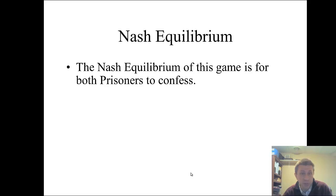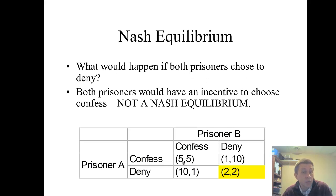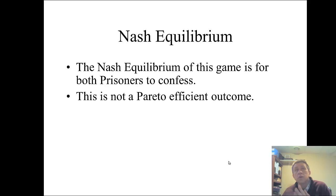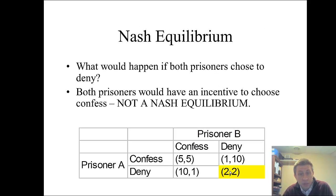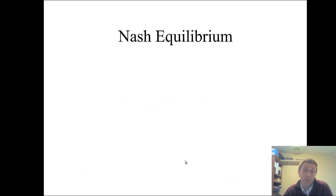So what is the Nash equilibrium? It's for both prisoners to confess. Prisoner A does not want to switch from five years in prison to ten years in prison, and neither does prisoner B. Neither player has an incentive to deviate given what the other player is doing. The Nash equilibrium is for them both to confess — but this is not a Pareto efficient outcome. Both of them denying — two years in prison — is better than five years, so confess-confess is the Nash equilibrium but is not Pareto efficient.